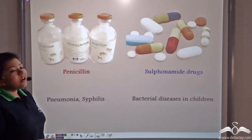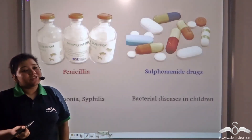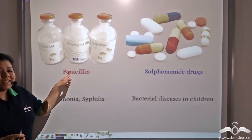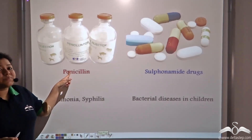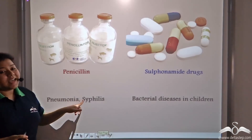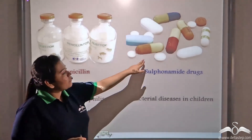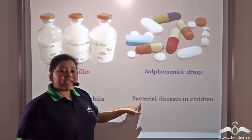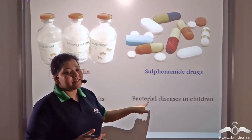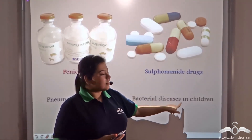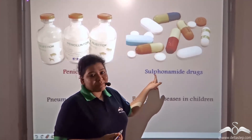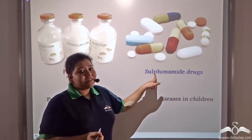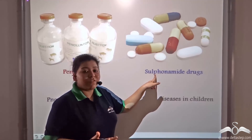A few examples of such drugs that we additionally take from outside are penicillin, which helps us protect against pneumonia and syphilis, and sulfonamide drugs that help us in protecting against bacterial diseases in children. Now, what does sulfonamide mean?